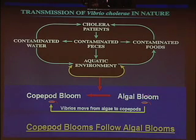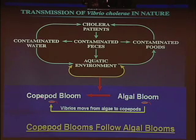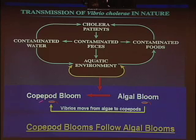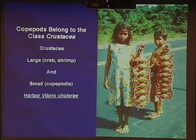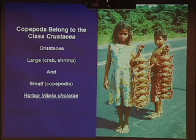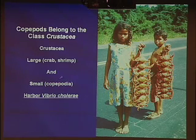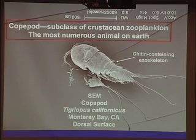Algal blooms are not stable; they undergo an evolution when they outgrow their nutrients. Vibrio cholerae associated with algal blooms then move to the predator of algae in the region: copepods. Copepods belong to the class Crustacea — which comes in large forms like crab and shrimp, and small forms. The largest group of small crustacea is the family Copepodia. These are important because they harbor Vibrio cholerae. The common copepod Tigriopus californicus, magnified several thousandfold, looks very shrimp-like or lobster-like. Its exoskeleton — what you remove when you peel a shrimp or take the carapace off a Dungeness crab — is composed largely of a polysaccharide polymer called chitin, which can be degraded by Vibrio cholerae for food.